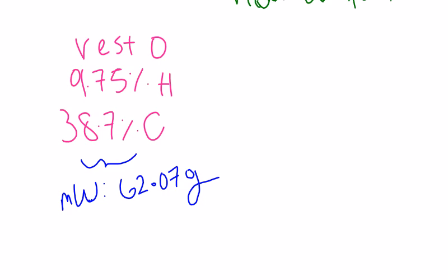In this question, the compound ethylene glycol contains 38.7% carbon, 9.75% hydrogen, and the rest of it is oxygen. The molecular weight of ethylene glycol is 62.07 grams. What is the molecular formula of ethylene glycol?